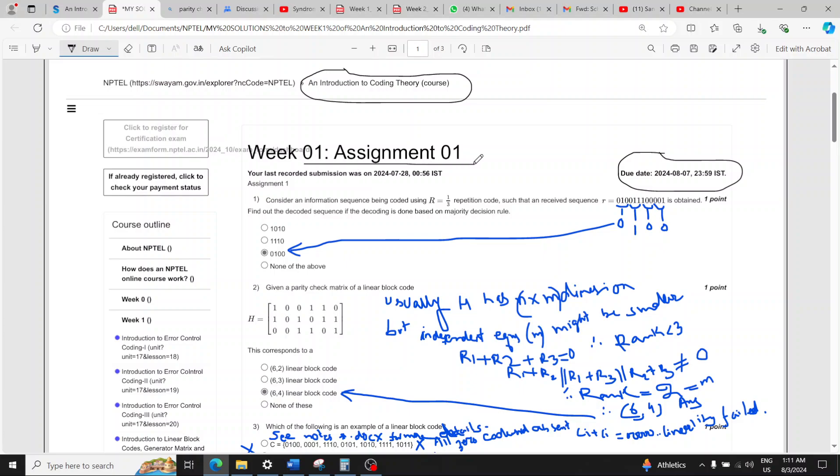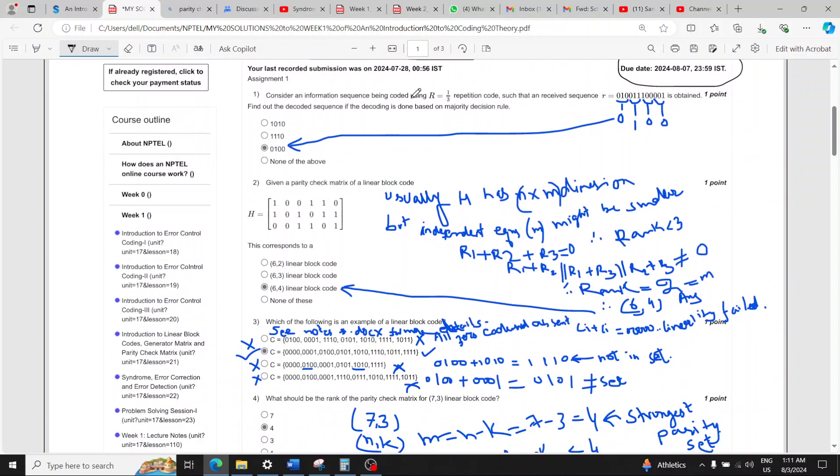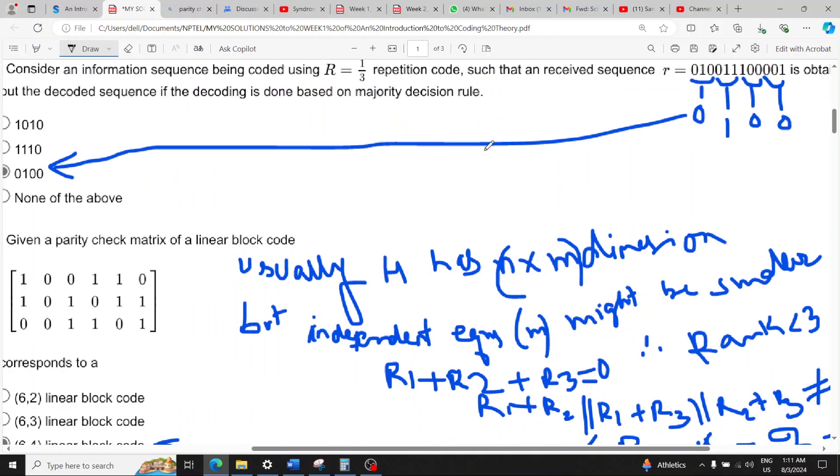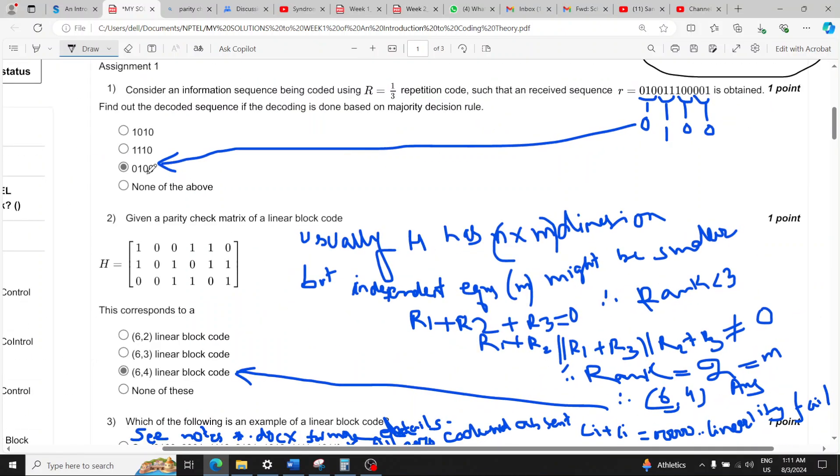These are my solutions. Answer one is option C because pairing into three bits, because three repetitions are being done for each code bit, you will get majority rule to say that zero one zero has two zeros so it must have been a zero and so on. So this is the answer.